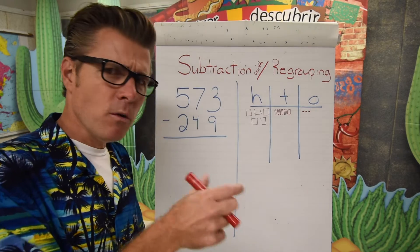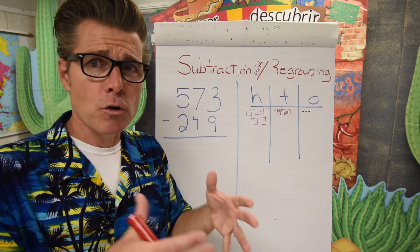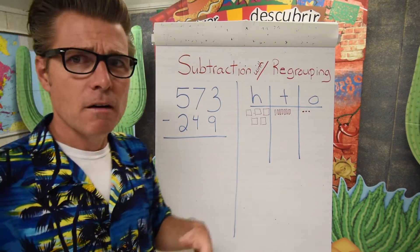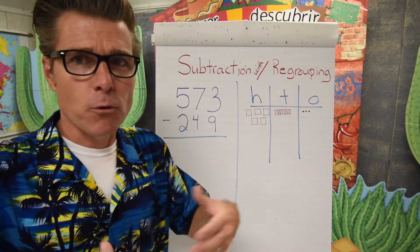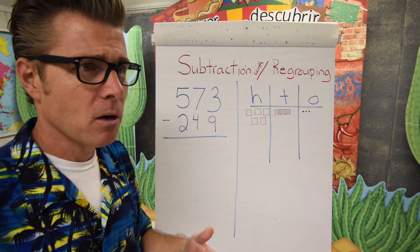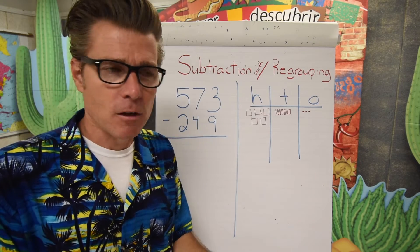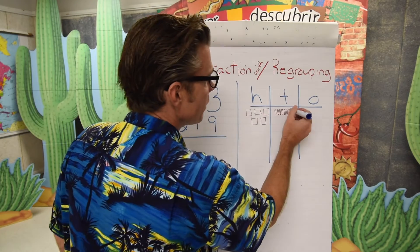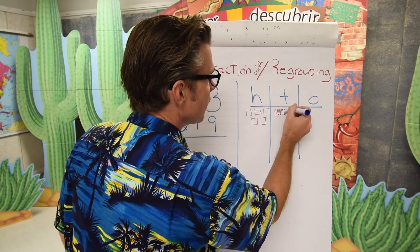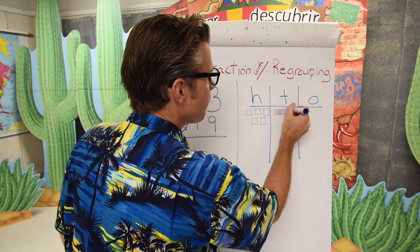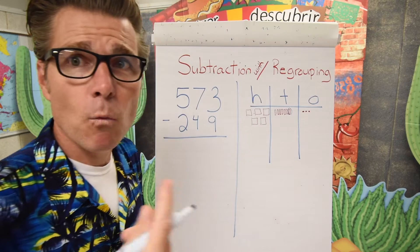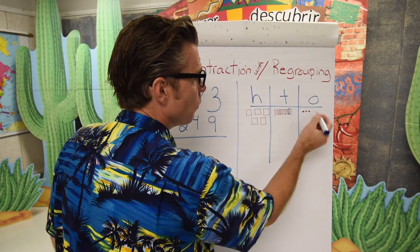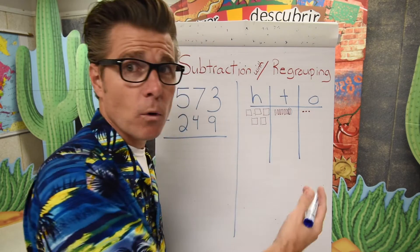We're going to take a little bit from the tens and add it to the ones. When we regroup, we do that in groups of ten. We can't just borrow four or borrow three — we have to borrow ten of them. So we're going to look at our tens, take one of those tens, break it up into ten ones, and add it to the ones side.